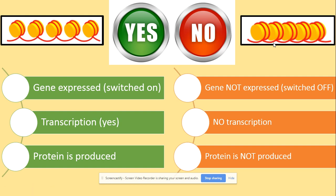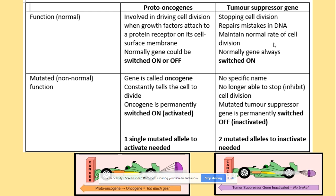Let's look back at proto-oncogenes and tumour suppressor genes and their mutations. The normal function of proto-oncogenes is to stimulate cell division — they tell the cell to divide. The normal job of the tumour suppressor gene is to stop cell division, repair mistakes in the DNA, and maintain the normal rate of cell division. Proto-oncogenes can be switched on or off — if on, they tell the cell to divide; if off, they do not. Tumour suppressor genes act as a brake, telling the cell to stop dividing.